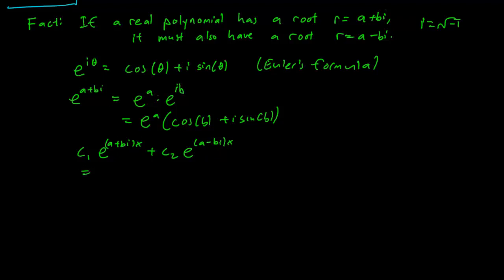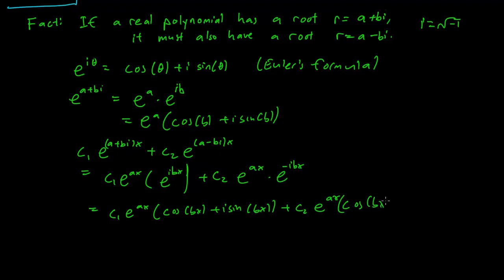So with a little bit of algebra, using this formula, we can calculate that this is going to be c1 times e to the a x times e to the i b x plus c2 e to the a x times e to the minus i b x. And this gets us c1 e to the a x times cosine b x plus i sine b x plus c2 e to the a x times cosine b x minus i sine b x.